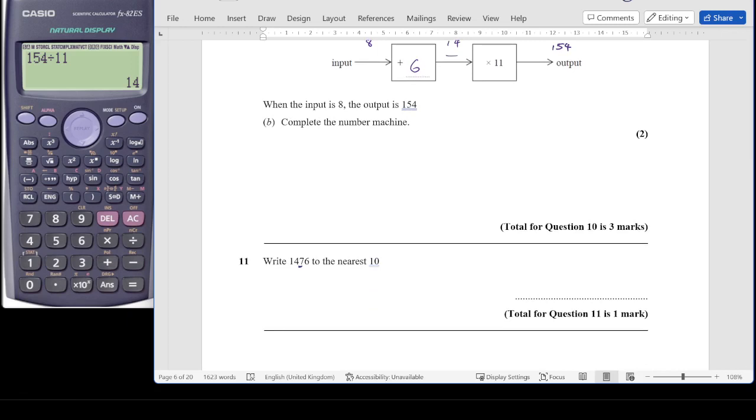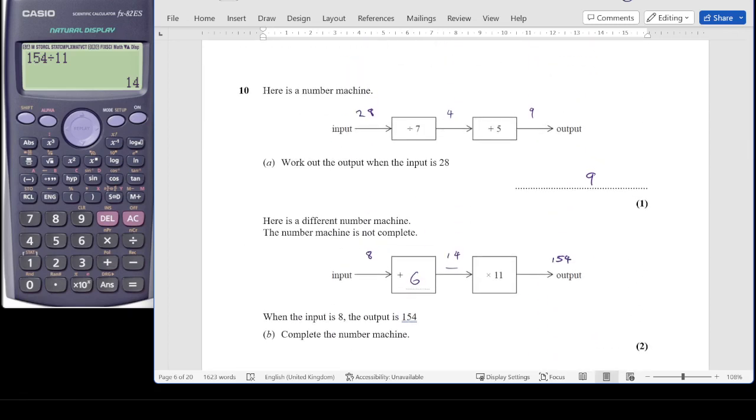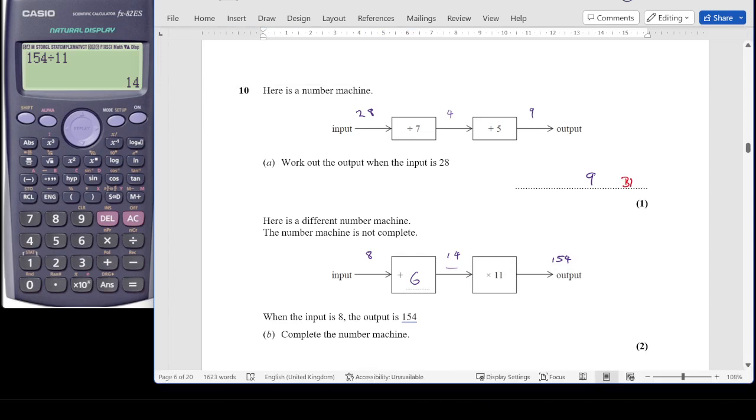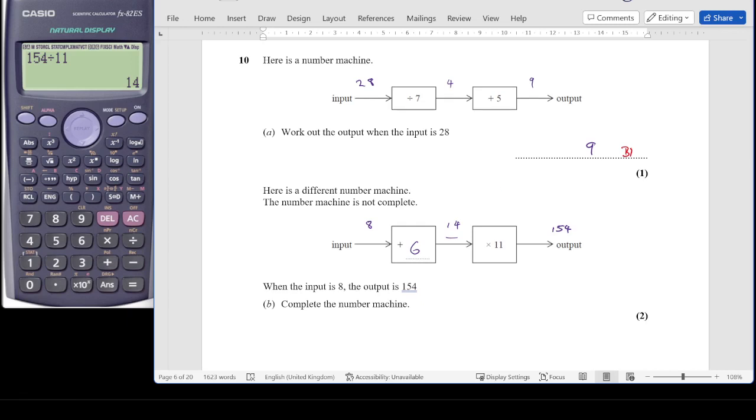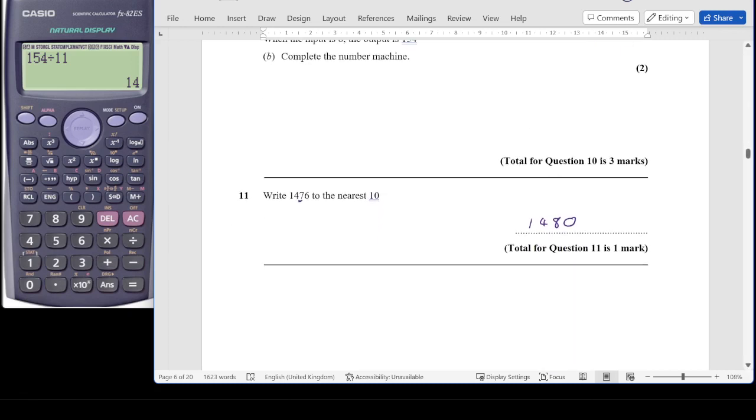Question 11. Write 1476 to the nearest 10. The 10 figure at the moment is 7. We need to decide if it remains a 7 or rounds up to an 8. Because the number in the units column is a 6, we would round it up to an 8, so that becomes 1,480. For question 10, we had B1 for 9. For part B, it is P1 for the process of completing the function machine, and A1 for the 6. Question 11 is just a B1 mark for 1,480. There we go.